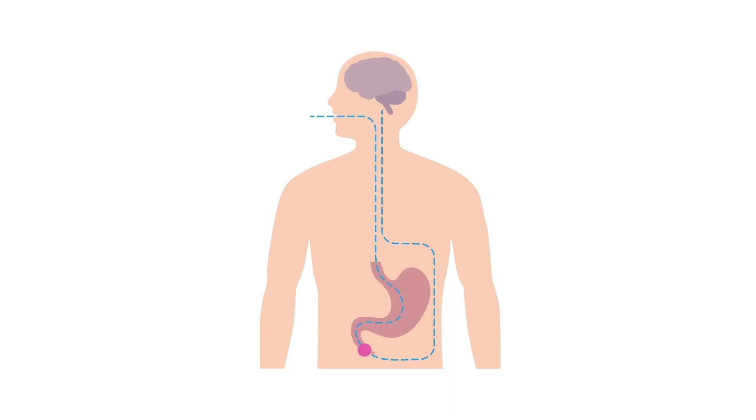Levodopa is swallowed and then absorbed in the small intestine. It moves through peripheral tissues and crosses the blood-brain barrier. After entering the brain, levodopa is broken down into dopamine and then released like the endogenous neurotransmitter.